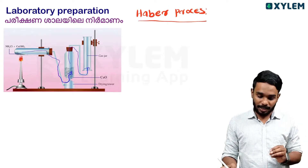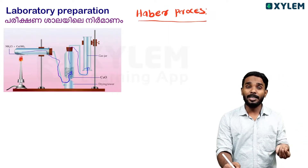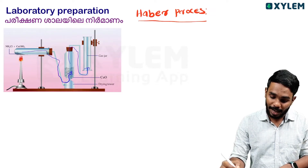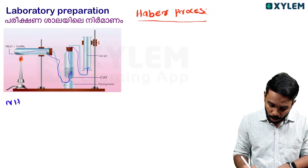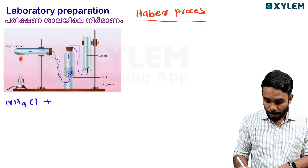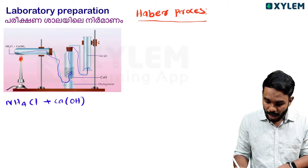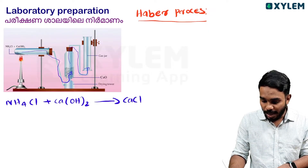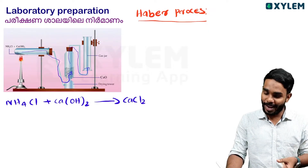For the chemical preparation of ammonia in the laboratory, the chemicals used are: ammonium chloride (NH4Cl) and calcium hydroxide (Ca(OH)2), producing calcium chloride (CaCl2).